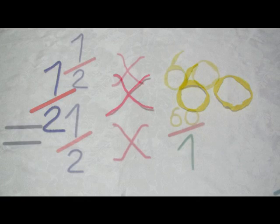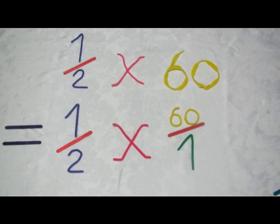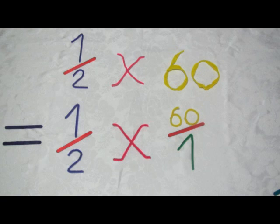The first step in method 2 is to turn 60 into a fraction by placing it over 1. Why 1? Because 1 is the only number that when you divide another number by it, the number remains the same. In this case, 60 divided by 1 equals 60. If we use 2, for example, 60 divided by 2 equals 30, so our number would change. We want to know what one half of 60 is, not one half of 30. So we use 1.